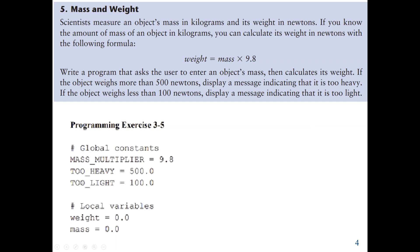The first thing we do is define three constant variables, or global constant variables. We know the mass multiplier in the formula is 9.8, so we store it in a constant variable called mass_multiplier. Too heavy means 500 newtons based on the condition, and too light means 100 newtons. We also need two local variables: we ask the user to enter the mass and store it in a variable named mass, then find the weight and store it in a variable named weight. From there, we compare our conditions — if weight is greater than or equal to heavy, et cetera.